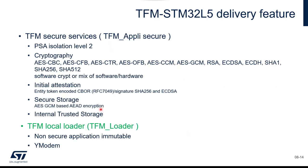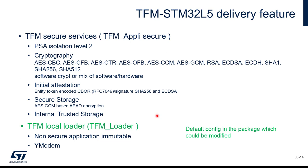For the services, PSA isolation level 2 is provided along with all cryptographic services. You can use software crypto or a mix of software and hardware — this is configurable. Initial Attestation token services are included. For secure storage, AES-GCM and Internal Trusted Storage are used. A TFM local loader is also delivered as a standalone example application responsible for downloading. You can activate it or not; if not activated, the loader can be placed inside your user application.